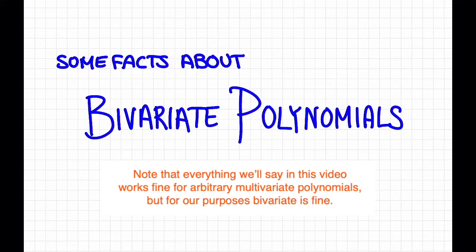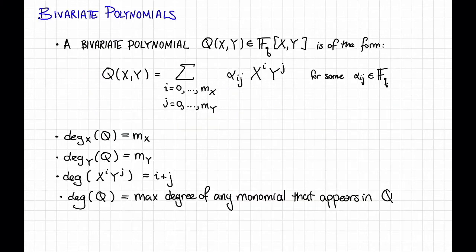In the next few videos, we'll be looking at algorithms to list decode Reed-Solomon codes. Before we do that, we will need to record a few useful facts about bivariate polynomials. First, what is a bivariate polynomial?